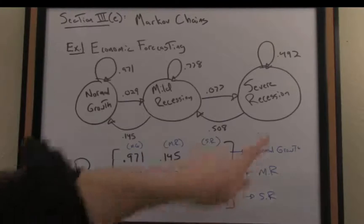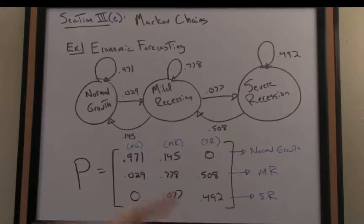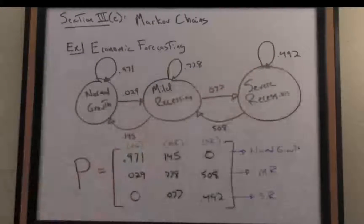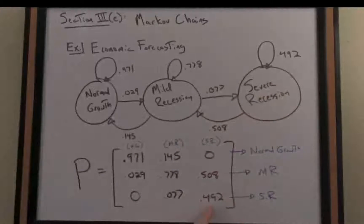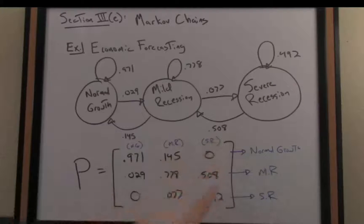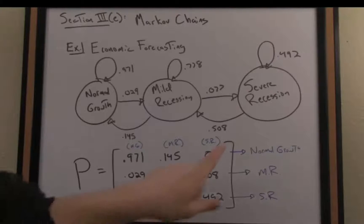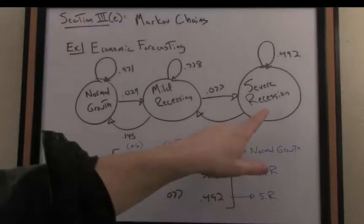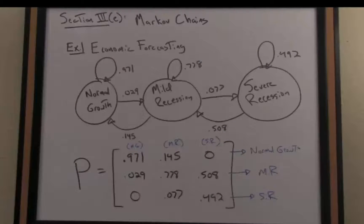Let's say if we're in severe recession what's the transitional probability to maintain severe recession? That probability is 0.492 that corresponds with the number in the lower right. There are a couple zero probabilities to go from one extreme case to another, so if we're in severe recession the probability of then going to a normal growth state is 0, there is no arrow from that node of severe recession to normal growth.